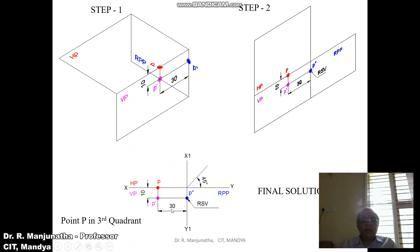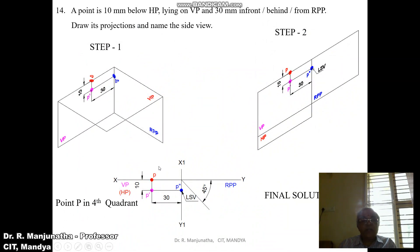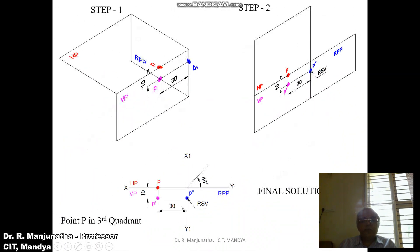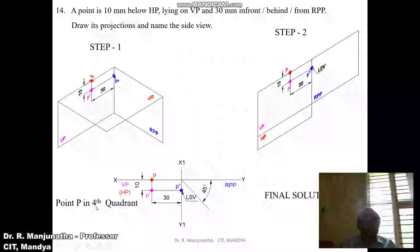Since the point is behind RPP, we get the right side view — write dimensions of 10 and 30 as shown. In such cases, if you analyze both solutions, they will have the same sketch except for the profile view. In the third quadrant the point P gives the right side view, and in the fourth quadrant the point P gives the left side view. This is how you write the final solution.